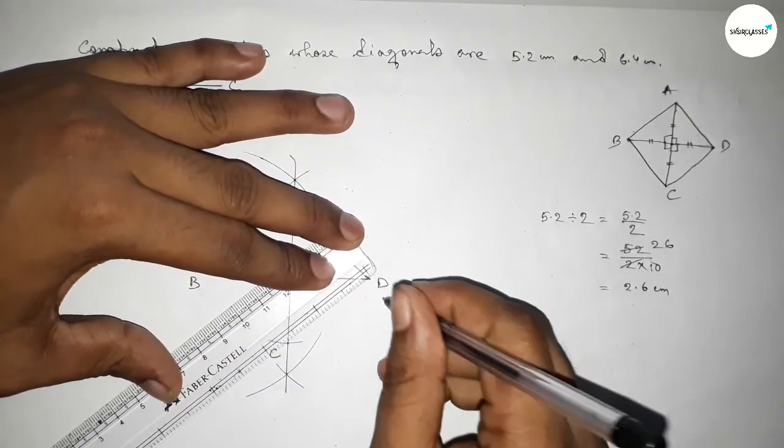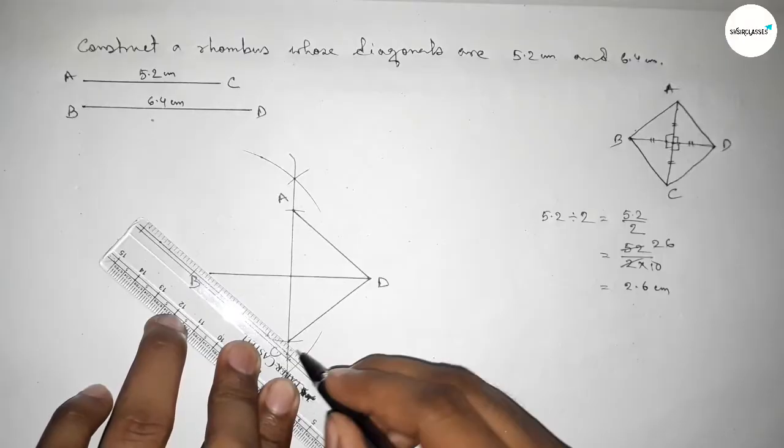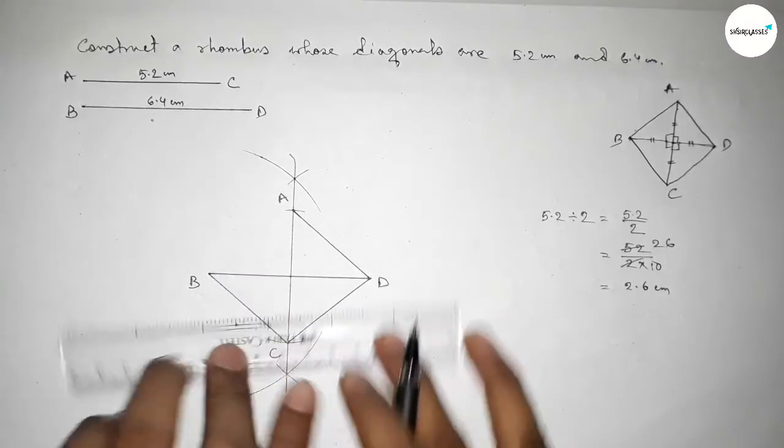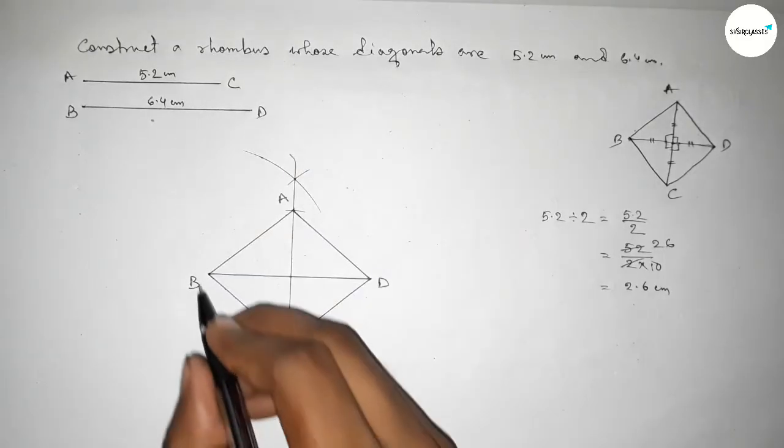Now first joining this side, then joining this side, now joining this side, and last joining this side to get the rhombus.